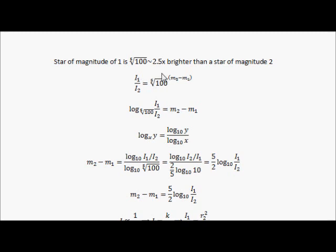You can see that the lower the magnitude, the brighter the star is, and that fits in with this definition. That's where this definition comes from. You can see if the difference is 2, then you get 2.5 squared. So the first star is 2.5 squared times brighter than the second star.